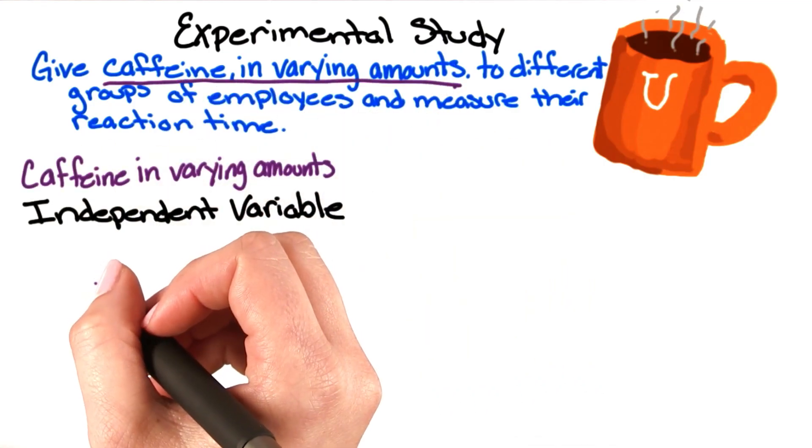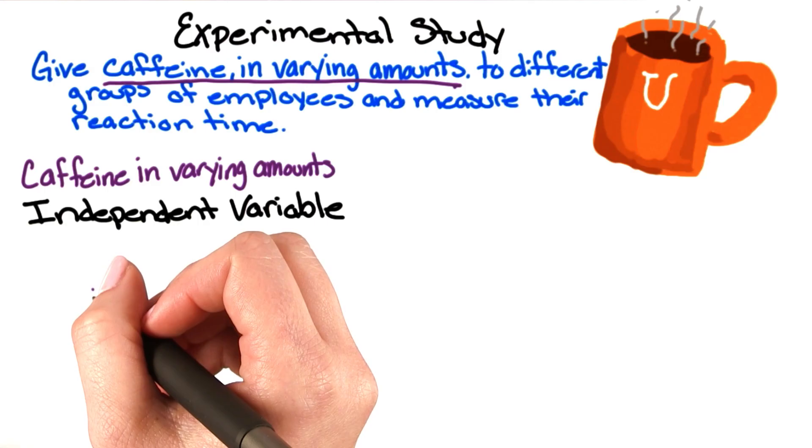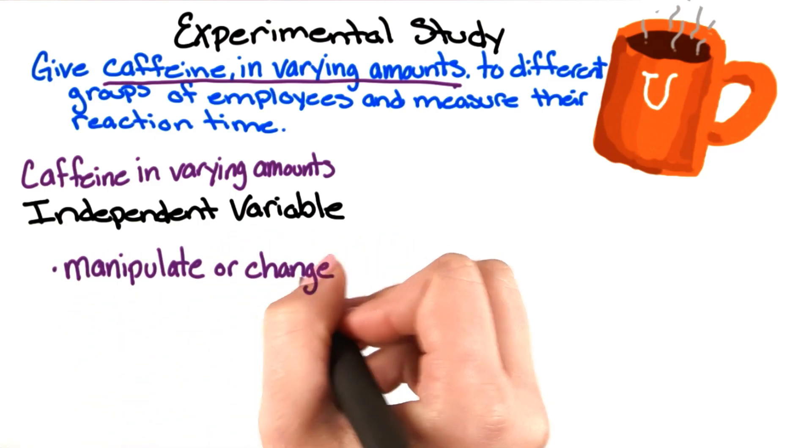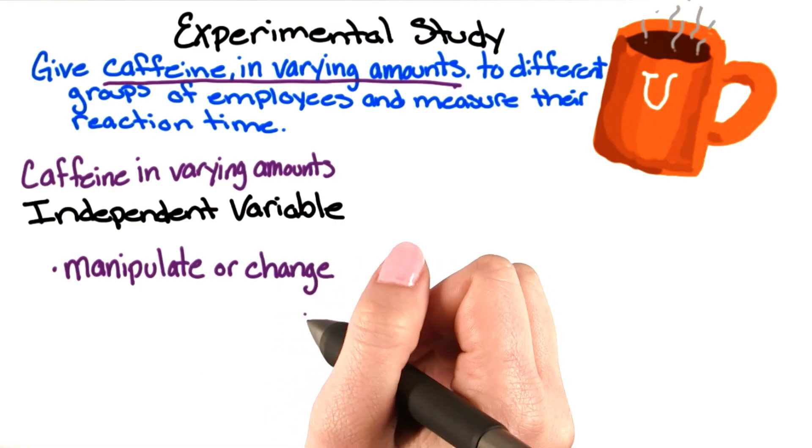Every experiment we do, we have to manipulate or change something, or else we cannot make a causal statement from our results. Whatever we manipulate or change is our independent variable.